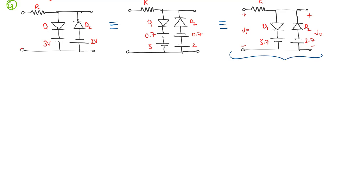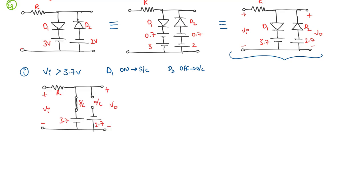For Case 1 where Vi is greater than 3.7 volts: D1 turns on because the P side is at higher potential than the N side, while D2 is off because the N side potential is higher than the P side. D1 acts as a short circuit and D2 as an open circuit. Therefore the output voltage equals 3.7 volts.